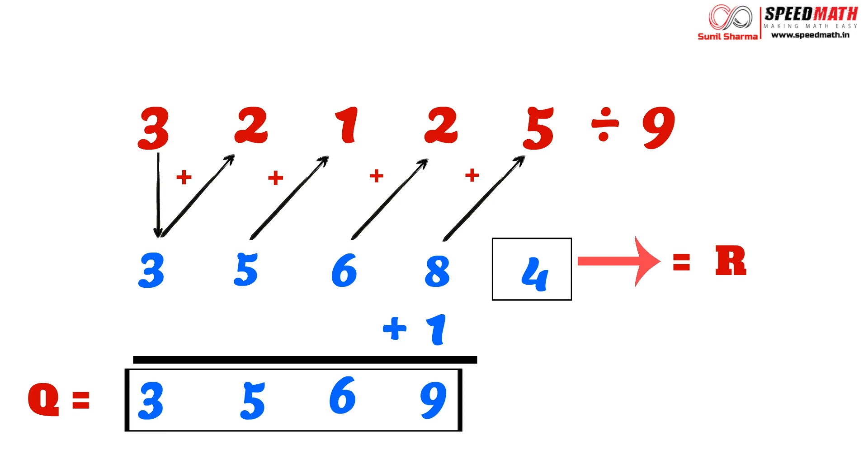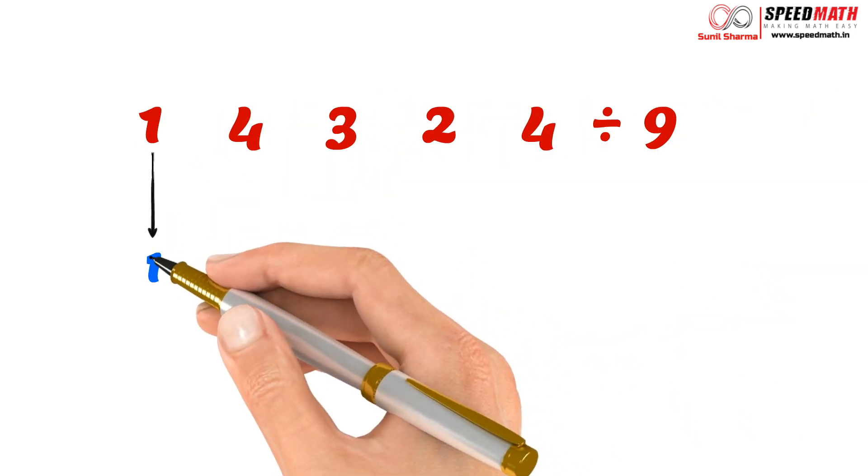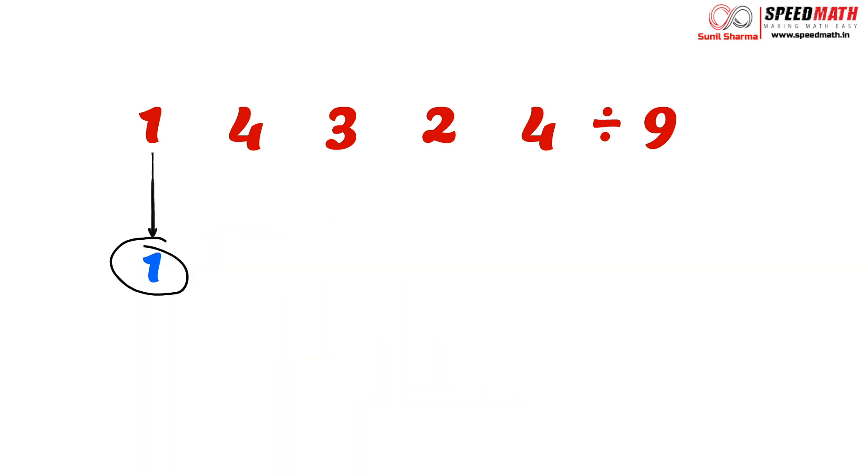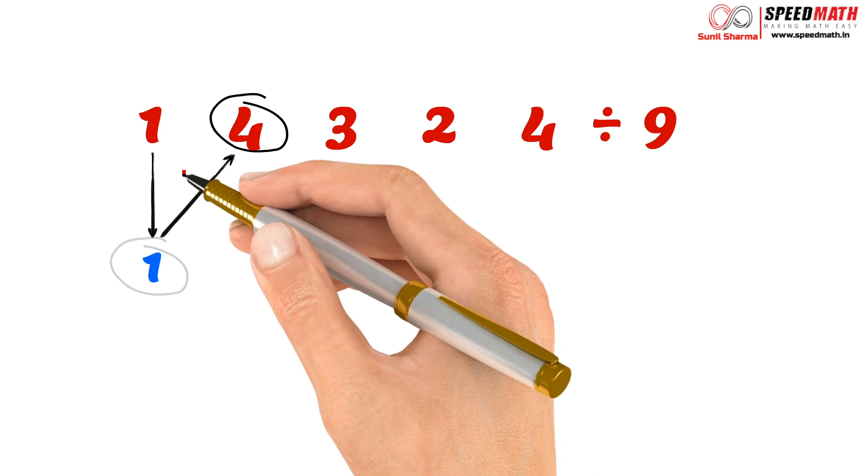Let's move on to the next division. Now let's take an example. Let's say we would like to divide 14324 by 9. So the steps are the same: 1 will come as it is, and then we will add 1 and 4, which will give us 5. 5 and 3 will give us 8.